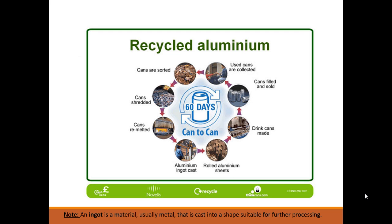Here is an outline of the aluminum recycling process. Used cans are collected, then sorted at a sorting and collection point. The cans are shredded, and the shredded cans are remelted and cast into ingots — material cast into a shape suitable for further processing. The ingots are then rolled out to make aluminum sheets, which are used to make drinking cans, filled with sodas, and put back on the market. The recycling process then continues.